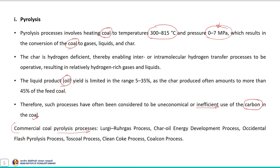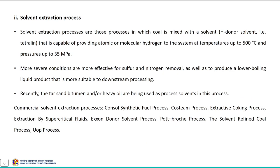There are a number of commercial coal pyrolysis processes available. Moving to the next process — solvent extraction — coal is mixed with a hydrogen donor solvent, for example tetralin. This solvent provides atomic and molecular hydrogen to the system at temperatures up to 500 degrees Celsius and pressures up to 35 MPa.